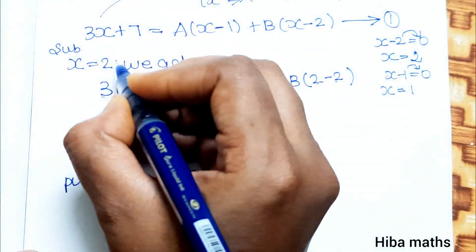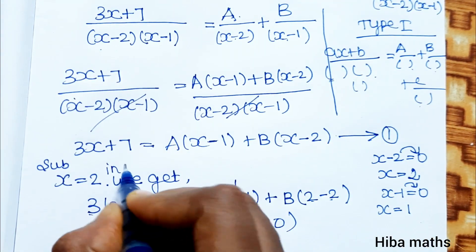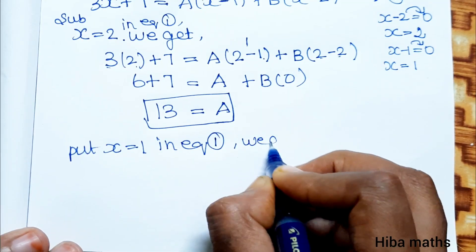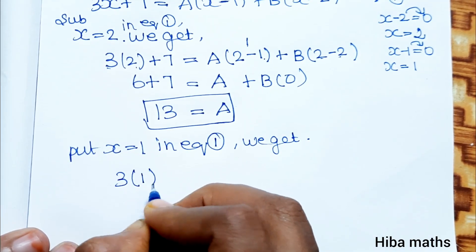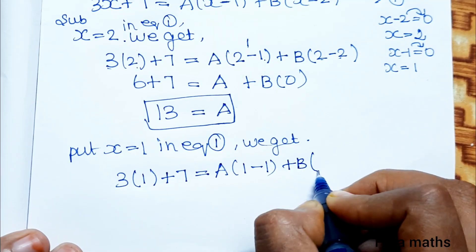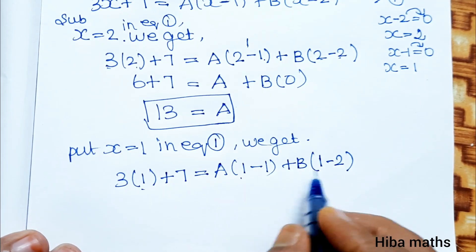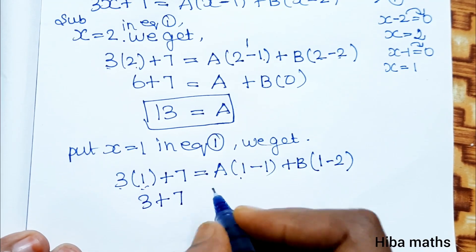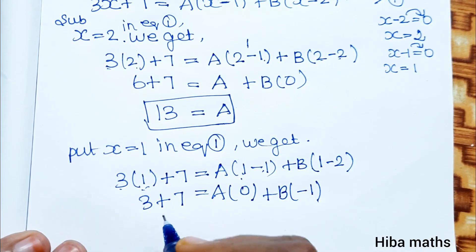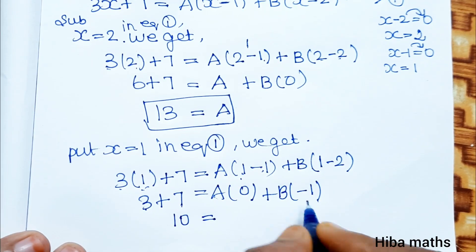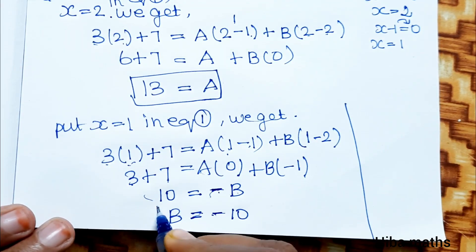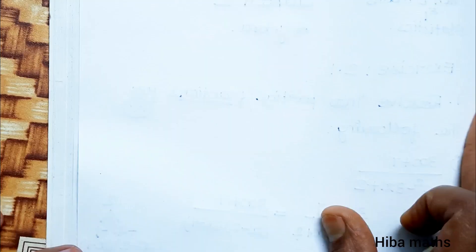Now substitute x equals 1 into the equation. We get 3(1) plus 7 equals A(1 minus 1) plus B(1 minus 2). That gives 10 equals 0 plus B times minus 1, so 10 equals minus B, meaning B equals minus 10.